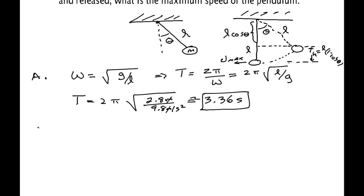So B, we have E initially being purely potential mgh which is mgL cosine theta, is converted into purely kinetic one half mv max squared.